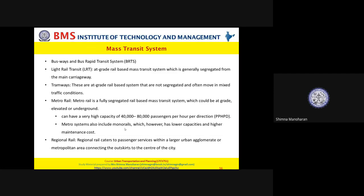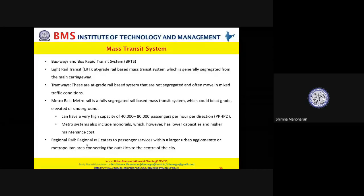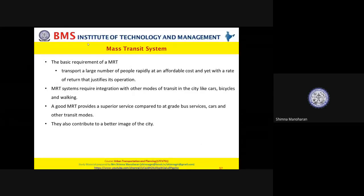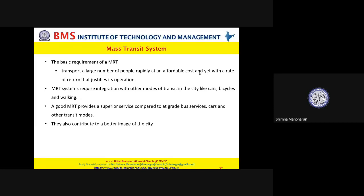Metro can also include monorails. Monorails have lower capacity but consume comparatively less infrastructure space. Regional rail connects cities to other cities or to the outskirts from the city center. The basic requirement of any mass rapid transit system is that it should be able to transport people at an affordable cost with a reasonable rate of return to justify the operation of the transportation system.